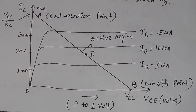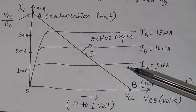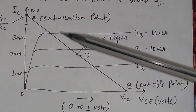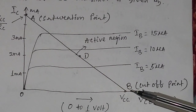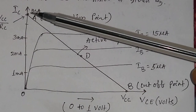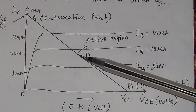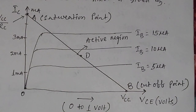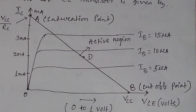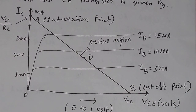So in this video we discussed about what is DC load line, what is the active region (between points A and B), what is the cutoff point and saturation point, and what is the Q point — which is equal to half of VCE or VCC. In the next video we will discuss about transistor biasing and stabilization circuits. Thank you.